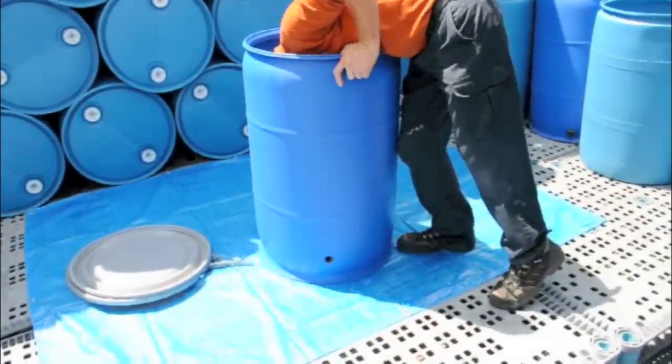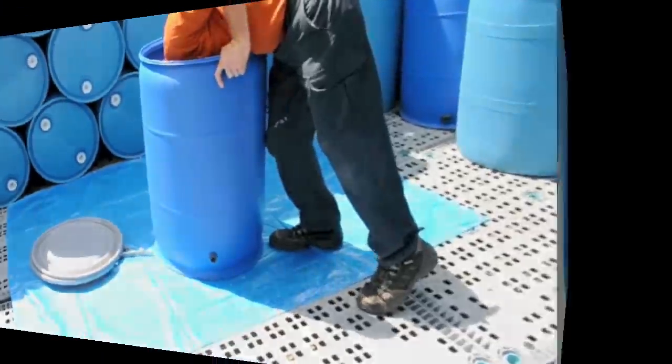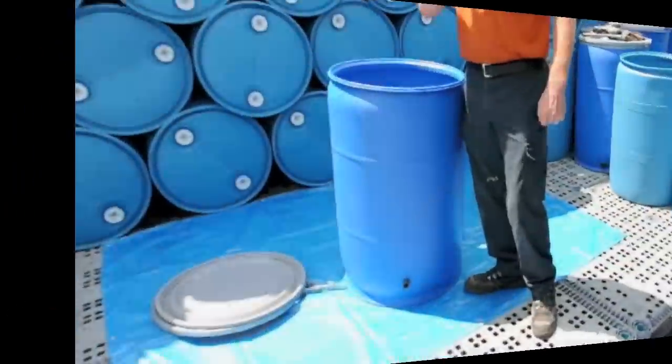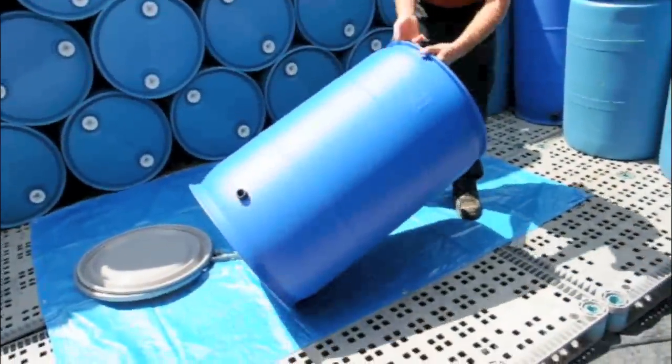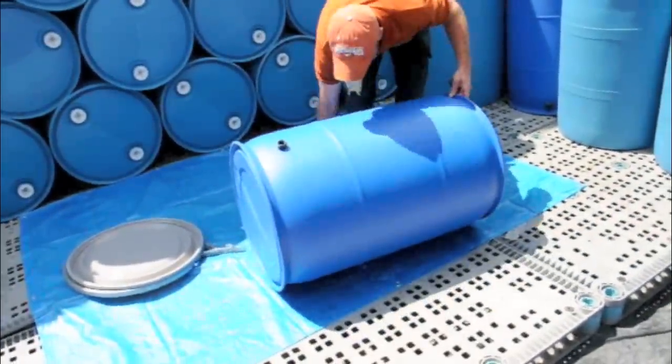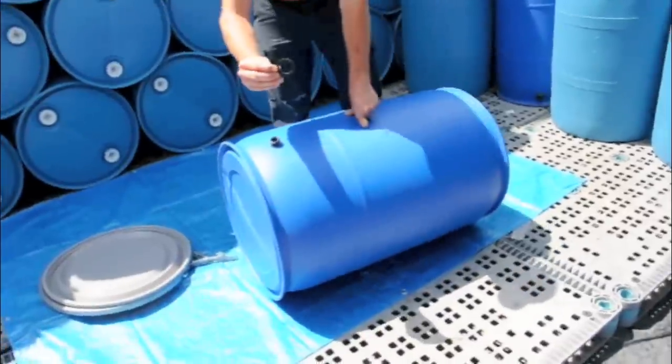Place the threaded end inside to out on the barrel hole, pushing it through firmly. Take the barrel and lay it on its side with the threaded end of the bulkhead fitting sitting up.